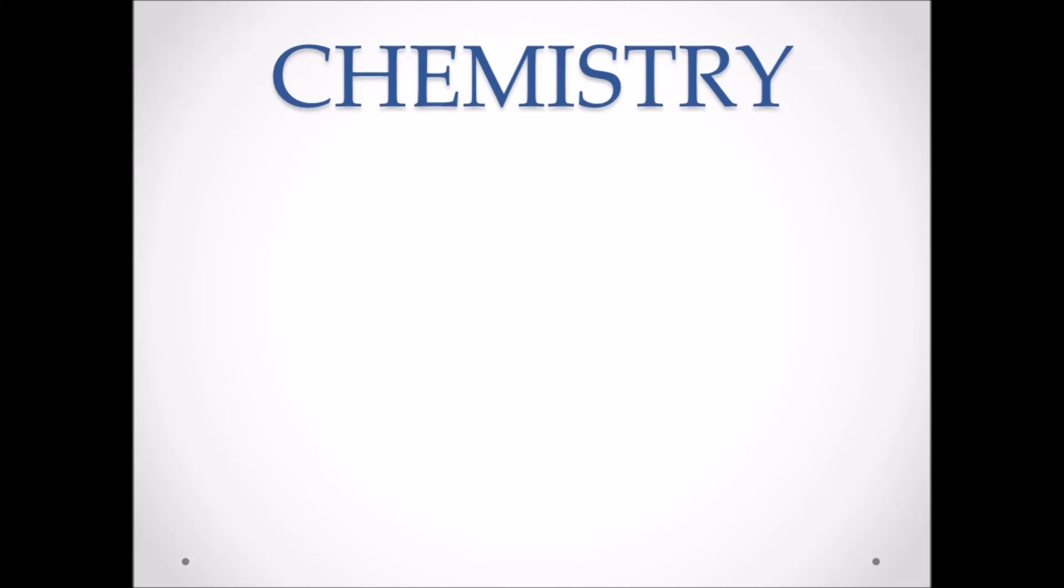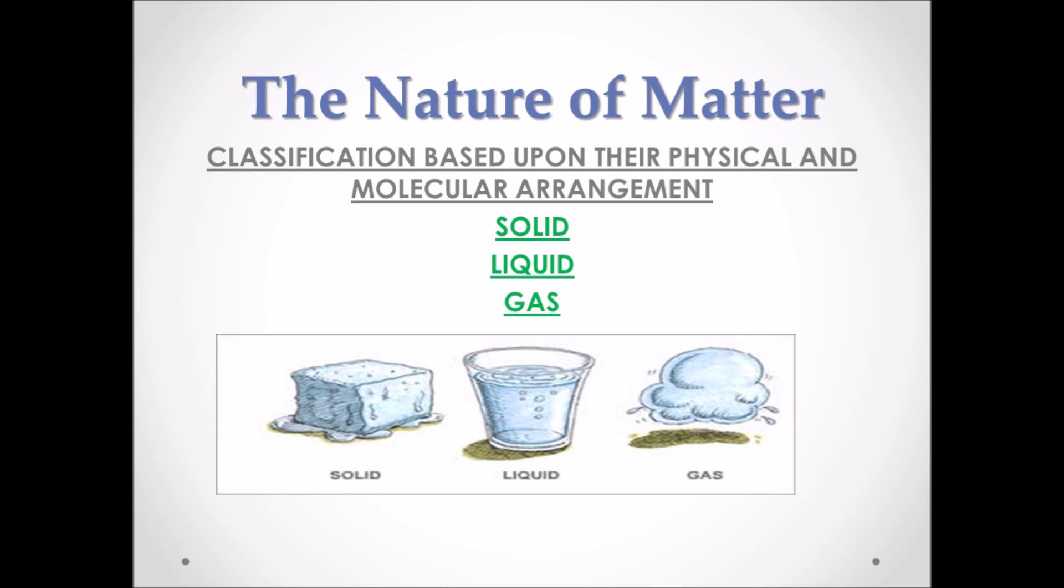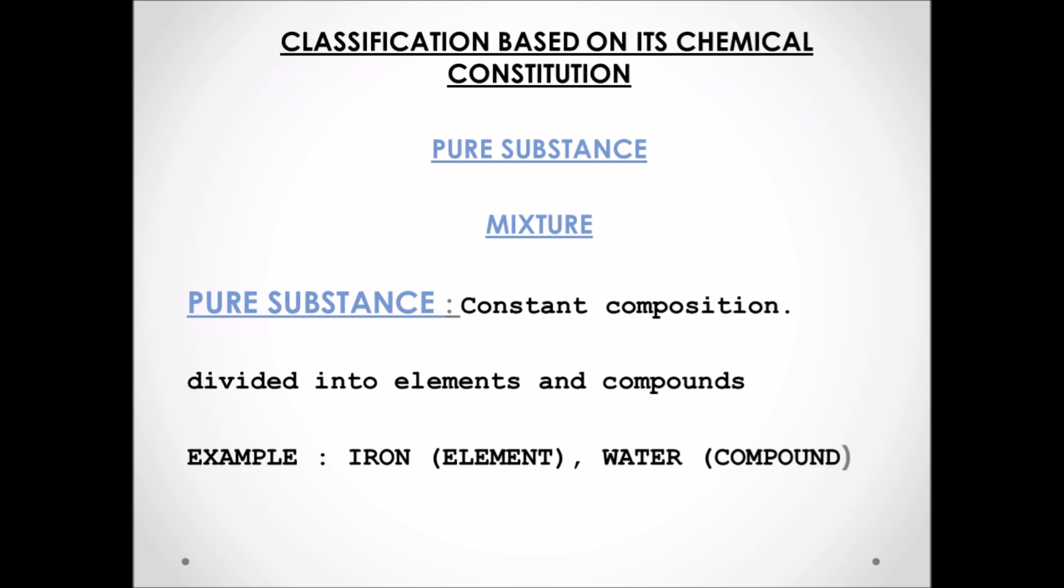In this video we are going to learn about the nature of matter. In the previous chapter we studied that matter is divided into three parts: solid, liquid, and gas, which was based upon the arrangement of molecules, intermolecular space and intermolecular attraction. These are based upon their physical arrangement. In this chapter we are going to study matter in a different way, based upon their chemical constituents. Based upon their chemical constituents we can divide matter into two main parts: pure substance and mixture.